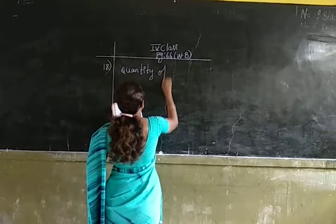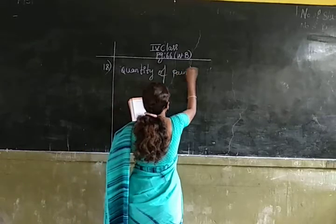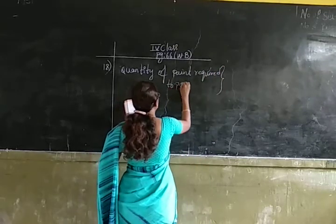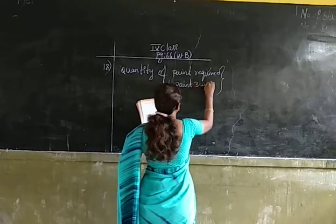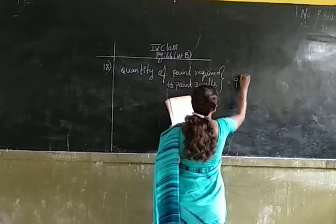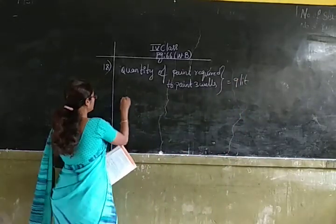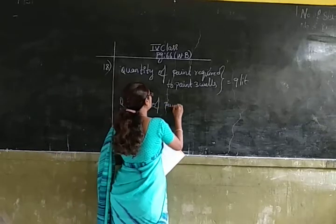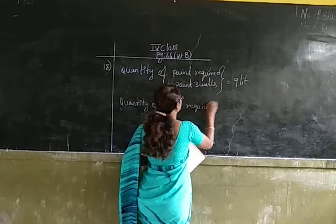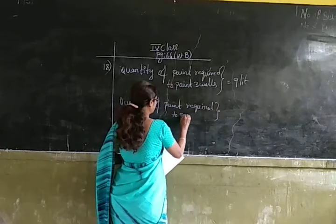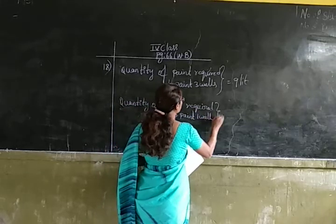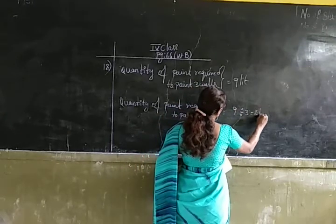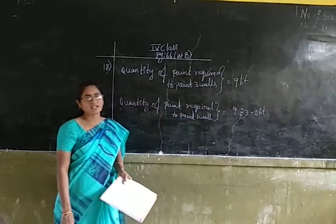Quantity of paint required to paint 3 walls is 9 liters. Now let us find out the quantity of paint required to paint 1 wall. For that we have to use the operation division. So 9 divided by 3 is 3 liters. To paint 1 wall, it requires 3 liters of paint.